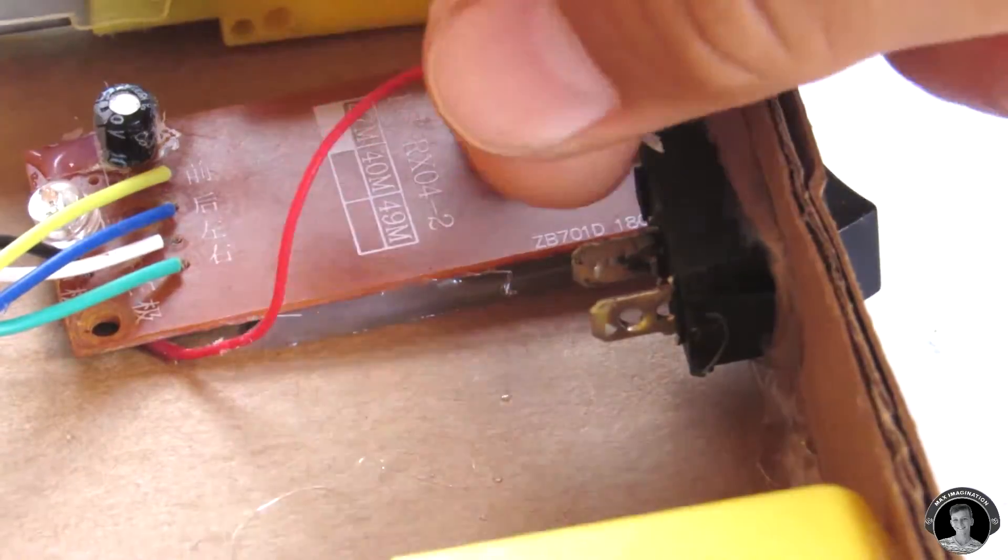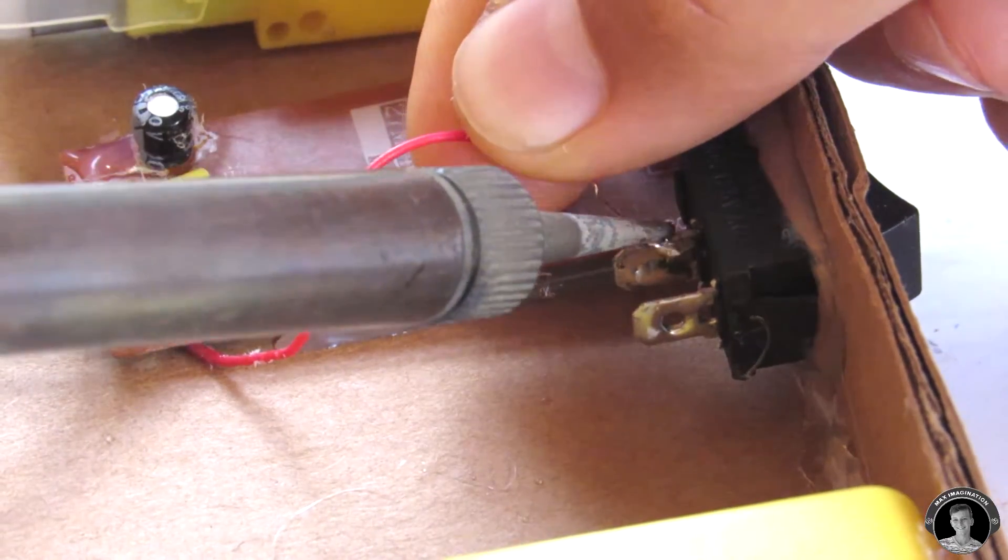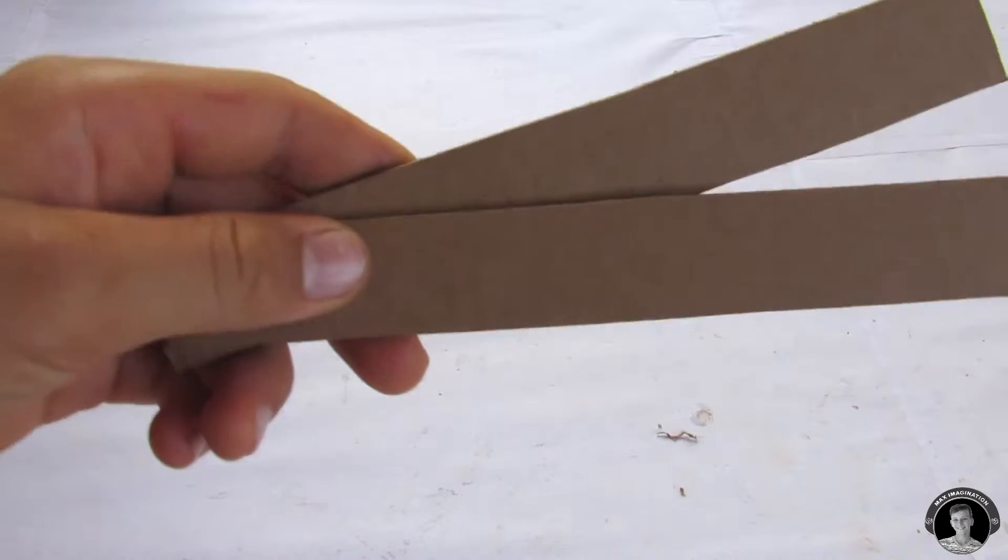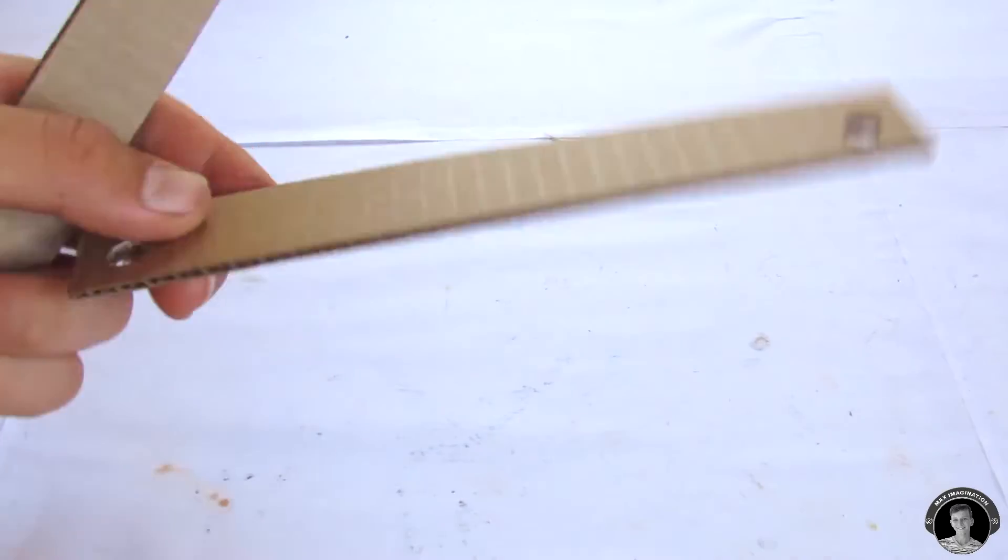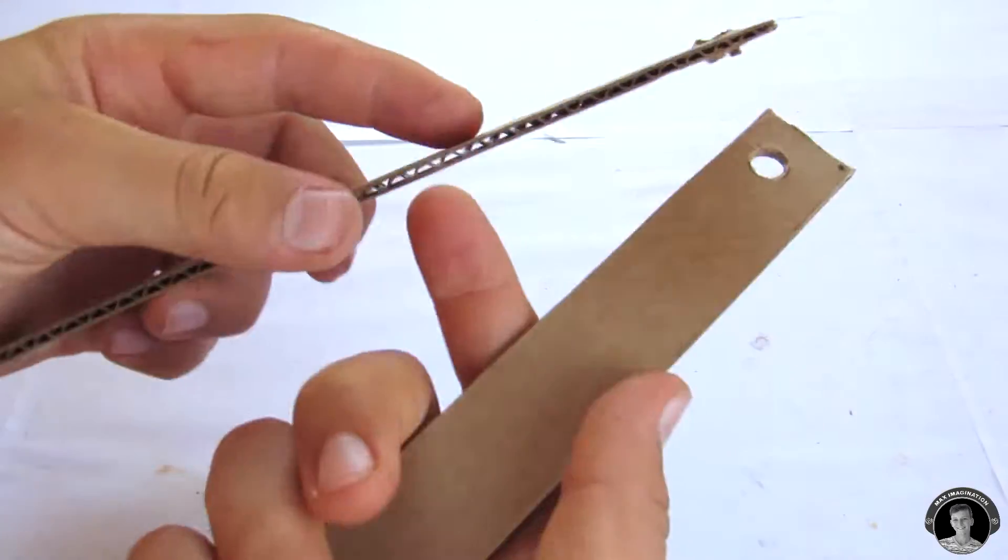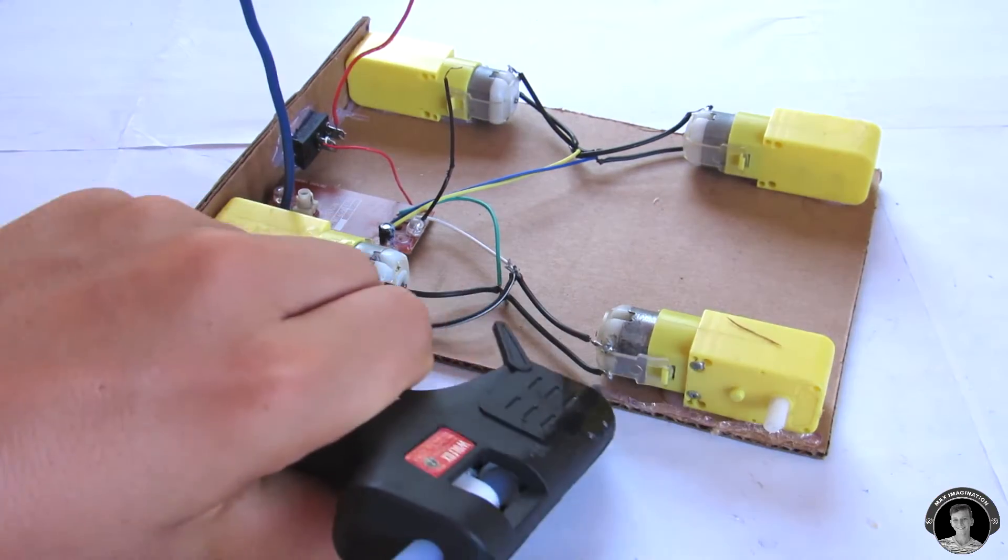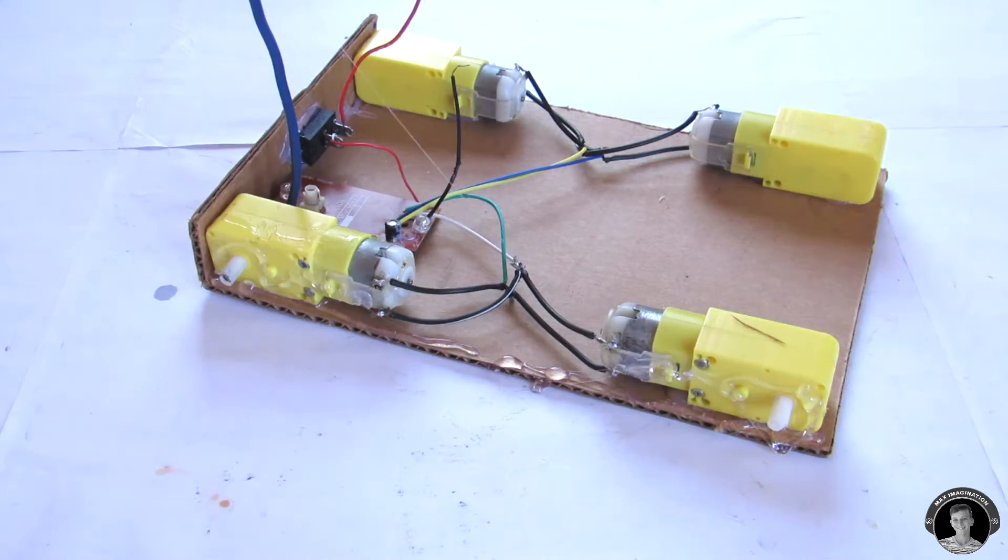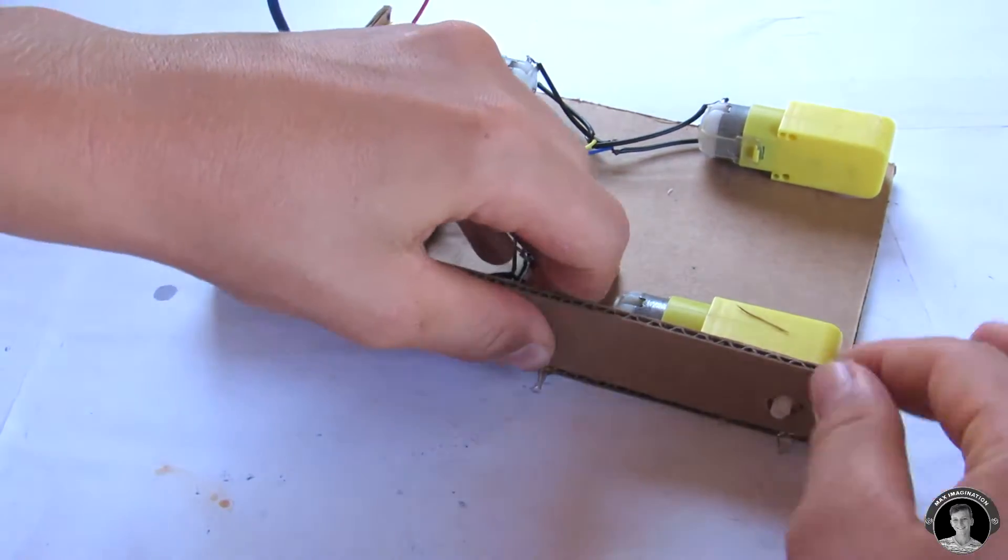Solder a positive battery wire from our receiver to either side of the switch. Then just take a new wire and solder onto the other pole of the switch.